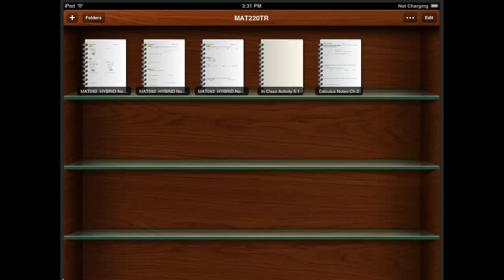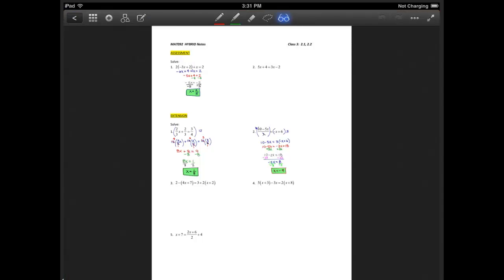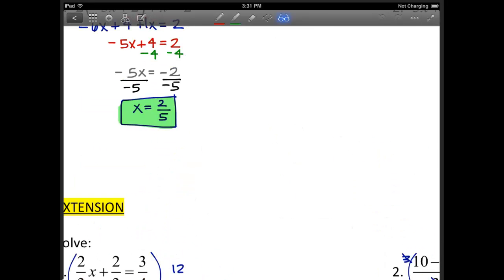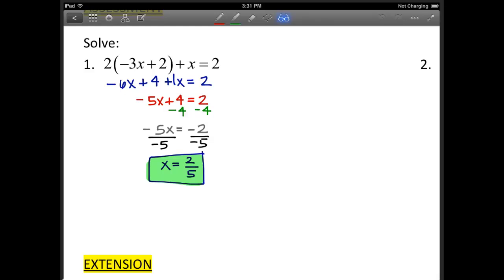So once you have the GoodNotes app up and you're in the document that you want to annotate, I'll go to this one right here. I use two of my fingers to zoom into a particular problem. So I put my fingers on and kind of spread the page apart and then move the page while I'm zooming to where I want it to show.